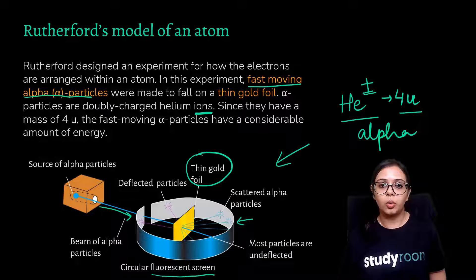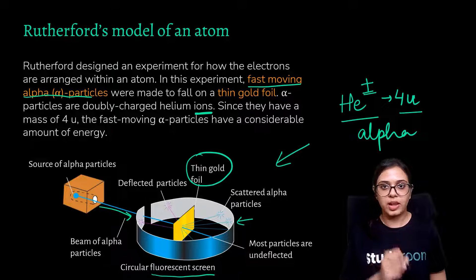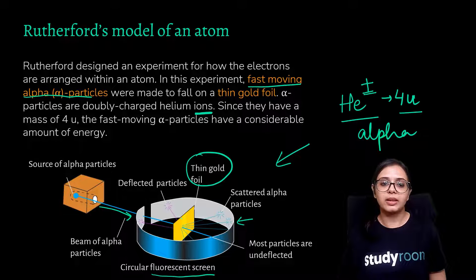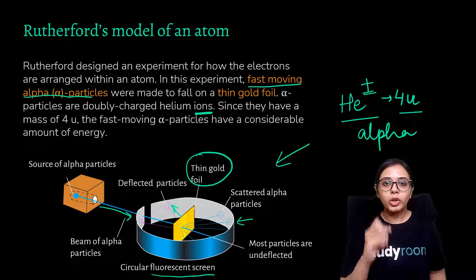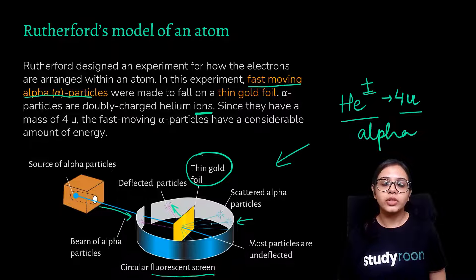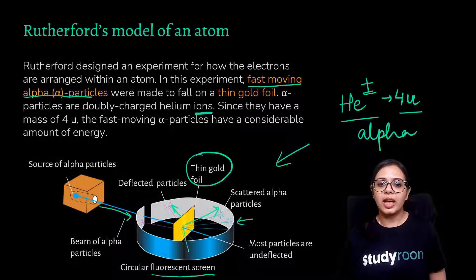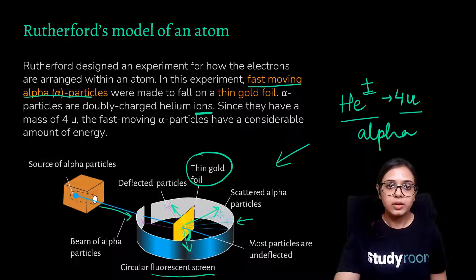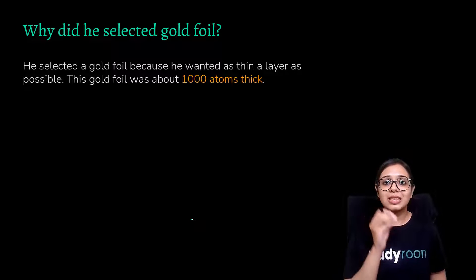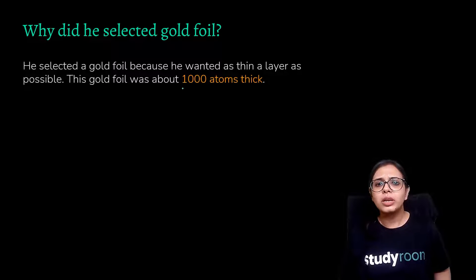Some of the alpha particles were deflected at small minor angles. But importantly, towards the center of the gold foil, some particles were deflected at a rather very large angle. He selected gold foil because he wanted as thin a layer as possible — the gold foil was about only a thousand atoms thick. Since metals are malleable, gold was the only metal that could be made malleable to a layer only a thousand atoms thick.